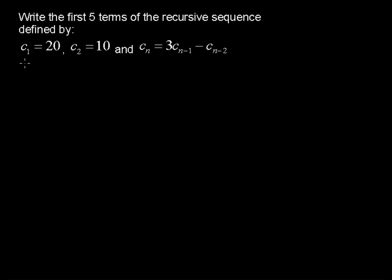Write the first five terms of the recursive sequence defined by C sub 1 equals 20, C sub 2 equals 10, and C sub n equals 3 times C sub n minus 1 minus C sub n minus 2.